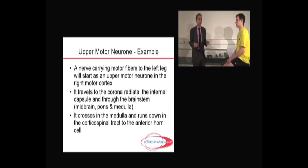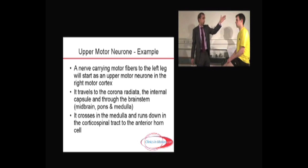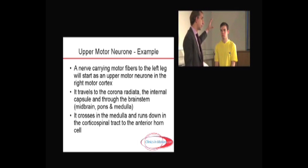An upper motor neuron lesion, for instance to Donica's leg, starts in his right motor cortex. It goes to the corona radiata, to the internal capsule, and then runs through the brainstem. The key part of this is the brainstem — the brainstem is the midbrain, the pons, and the medulla.